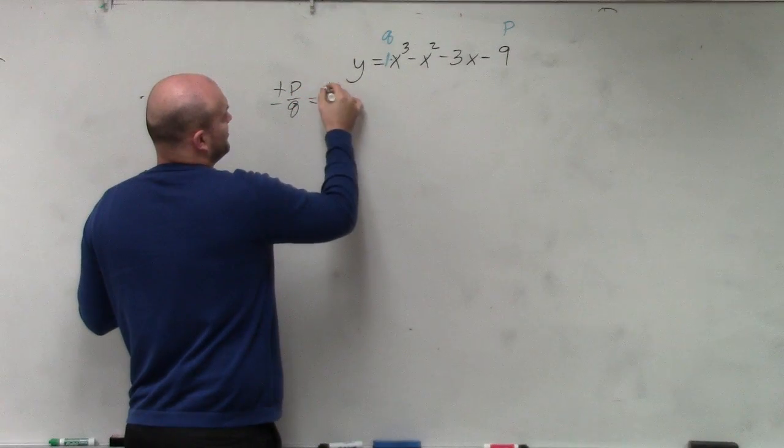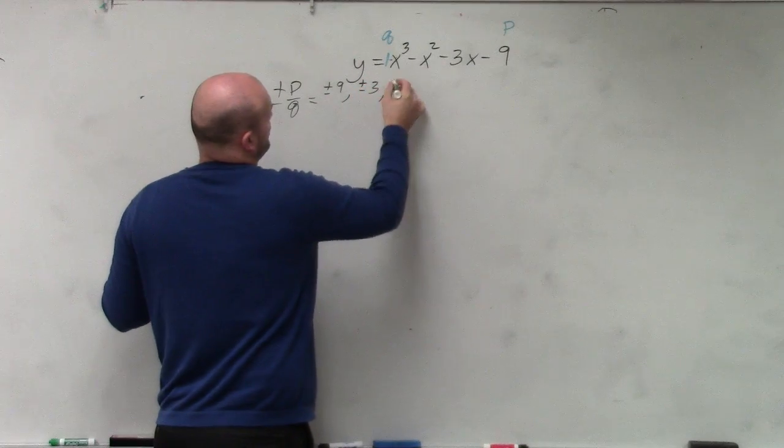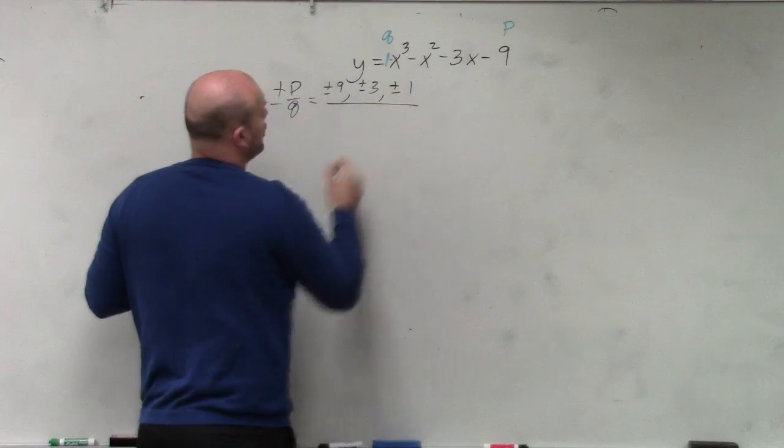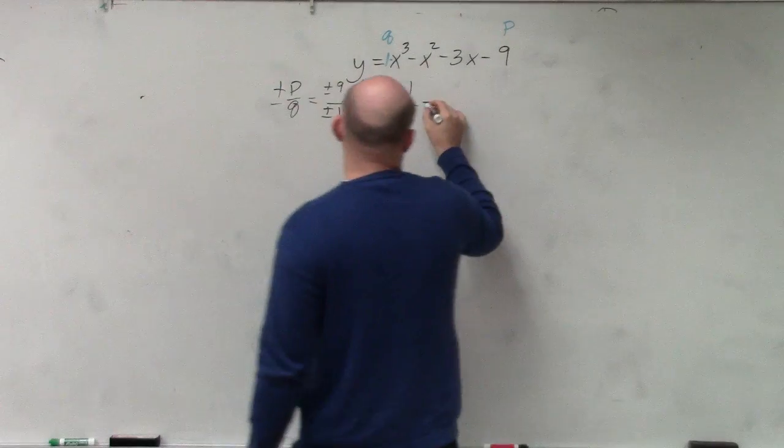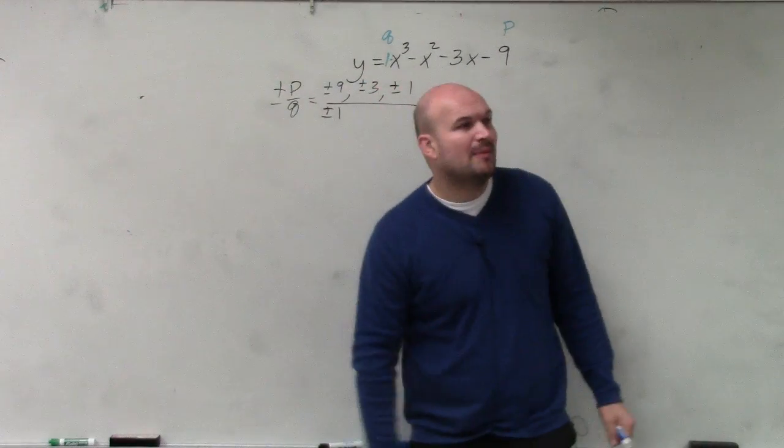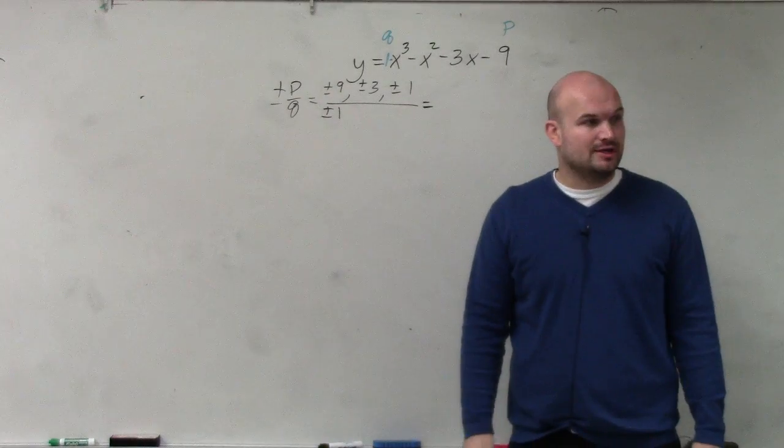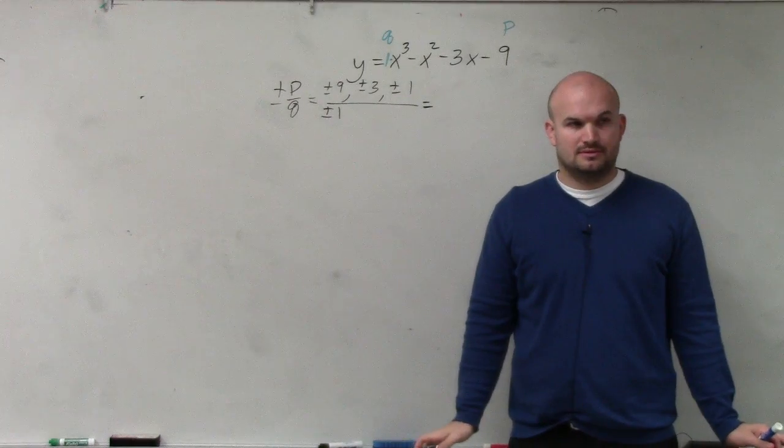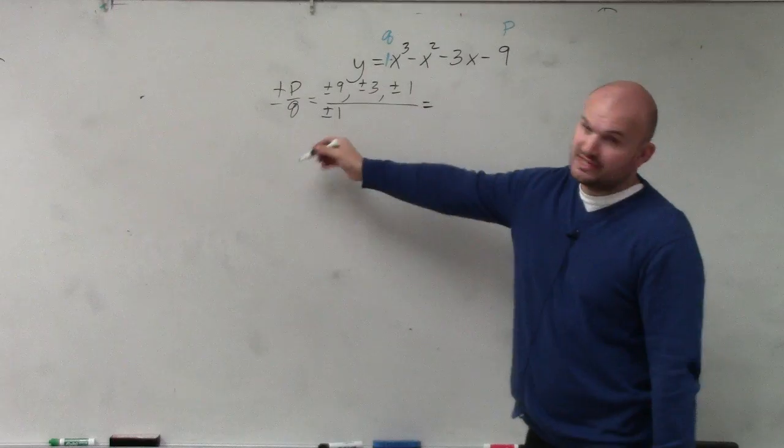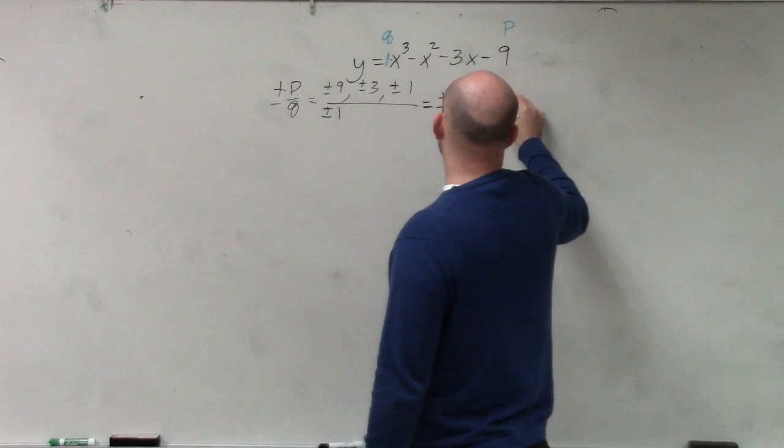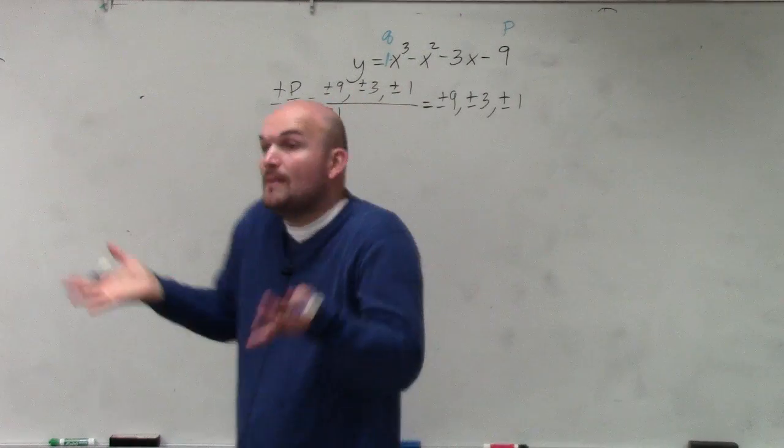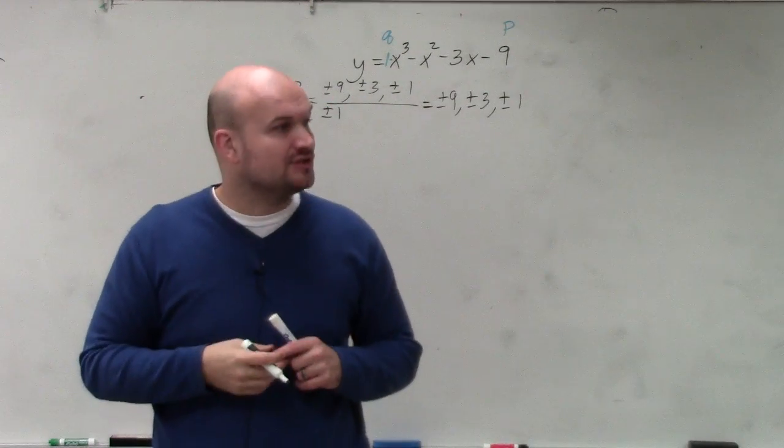So that's going to be plus or minus 9 over plus or minus 3 over plus or minus 1 over the factors of q, which is just plus or minus 1. Does everybody agree with me? Those are all my possible factors of p over q. Then you just write them out. Since everything's over 1, I can simplify that. Plus or minus 9, plus or minus 3, plus or minus 1. So those are all the possible rational zeros.